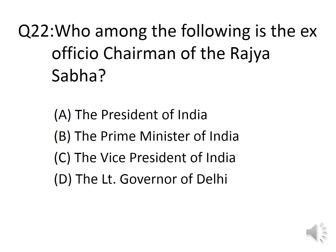Question 22: Who among the following is the Ex-Officio Chairman of the Rajya Sabha? Options: A. The President of India, B. The Prime Minister of India, C. The Vice President of India, D. The Lieutenant Governor of Delhi. The answer is Option C, the Vice President of India. Ex-officio means the person is a member by virtue of holding some post.